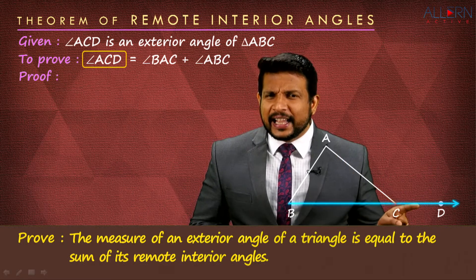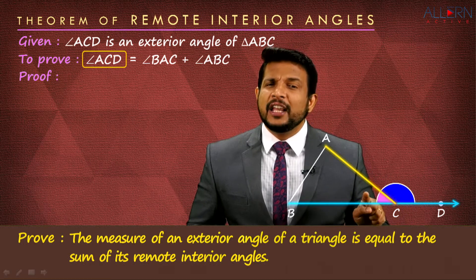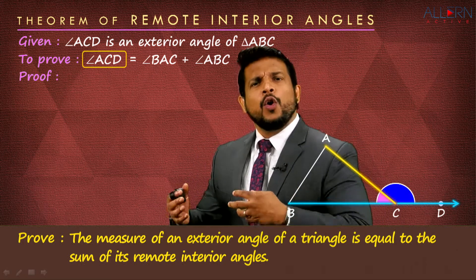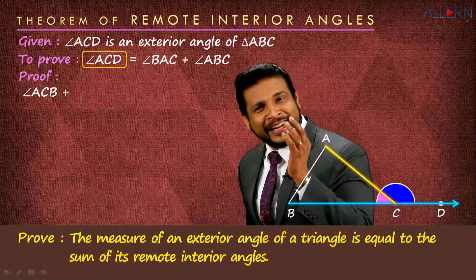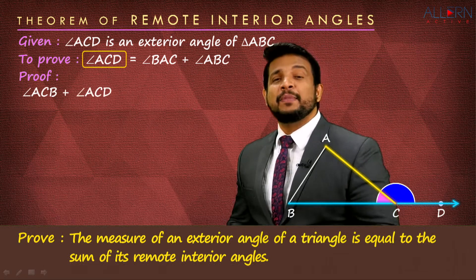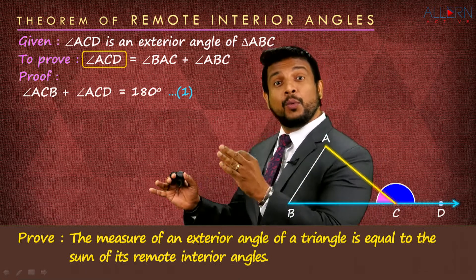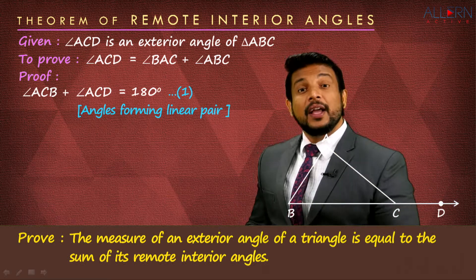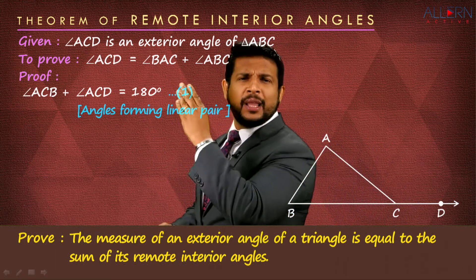That means we know that angle ACD forms a linear pair with angle ACB. So their sum is equal to 180°. We write that as result number one: angle ACB plus angle ACD is equal to 180°. The reason is angles forming a linear pair. We wrote this because we had to think about angle ACD.